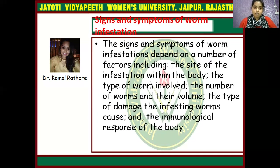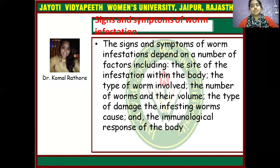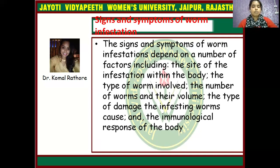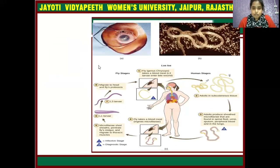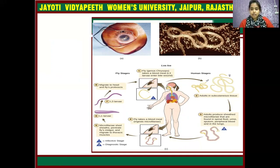Signs and symptoms of worm infestation depend on a number of factors including the site of infestation within the body, the type of worm involved, the number of worms and their volume, the type of damage the infesting worms cause, and the immunological response of the body. Worms may be found in the eyes and intestine. The life cycle involves fly stage and human stage, with adult male and female worms in subcutaneous tissue. Adults produce microfilariae found in the spinal cord, urine, sputum, peripheral blood, and lungs.